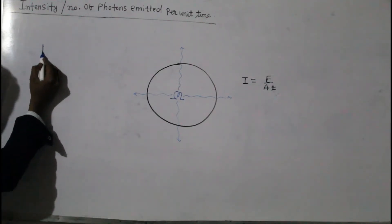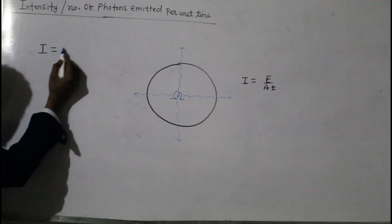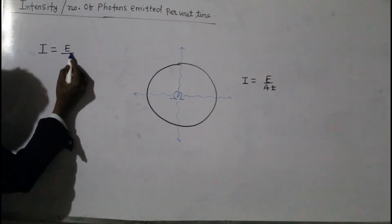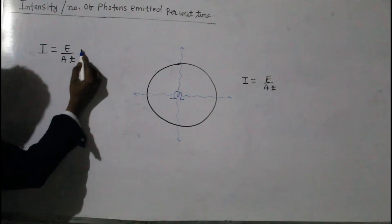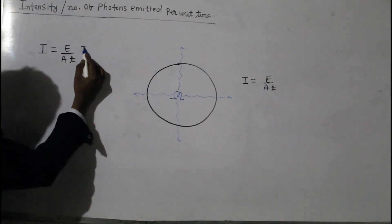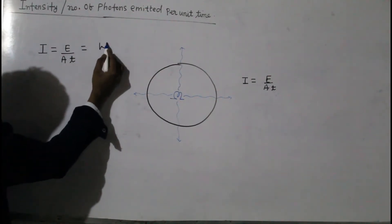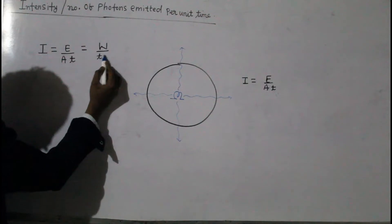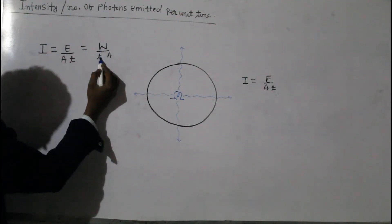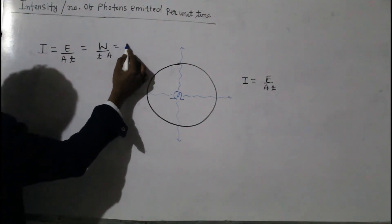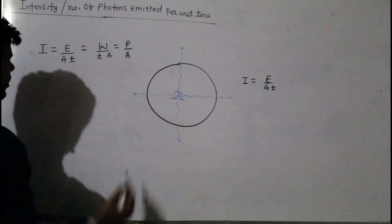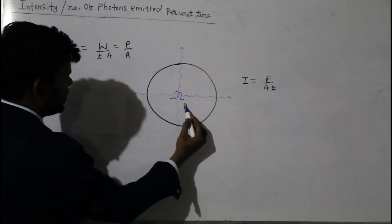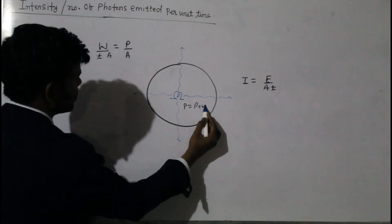So we have the definition of intensity: I is equal to E divided by A divided by T, where E is energy, A is surface area, and T is time. Since energy is basically equal to work done, we can write I as W divided by T, divided by A. Work done per unit time is known as power, so I equals P divided by A, where P is the power of the source.